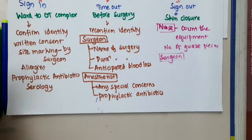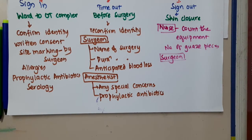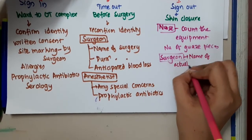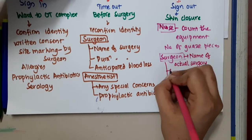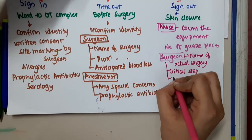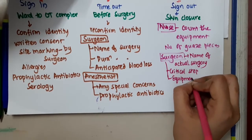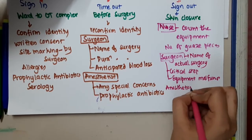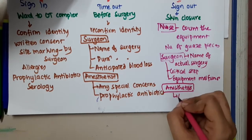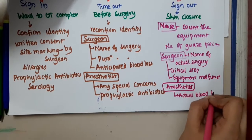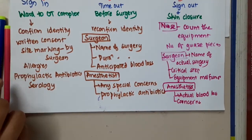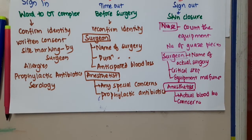During Sign Out, the surgeon should write the name of the actual surgery performed, note the critical steps, and document any equipment malfunction. The anesthetist should note the actual blood loss and all concerns related to blood loss. These are the components of the WHO surgical safety checklist.